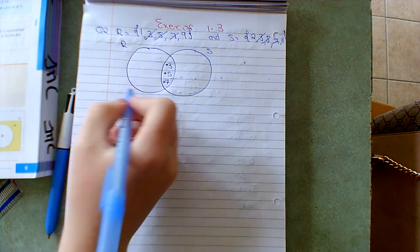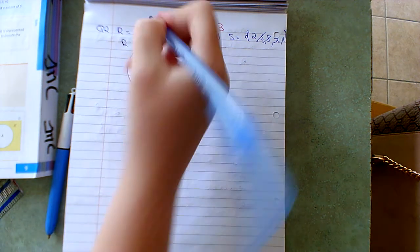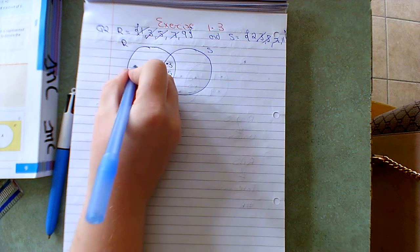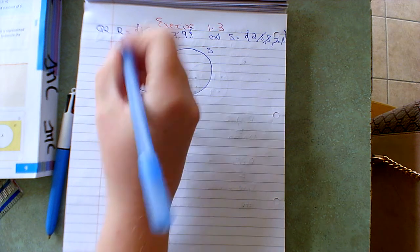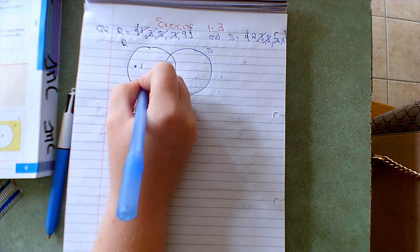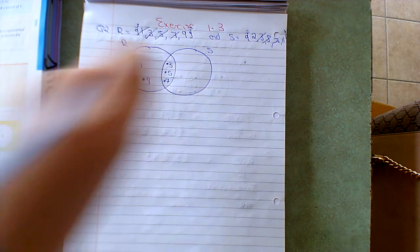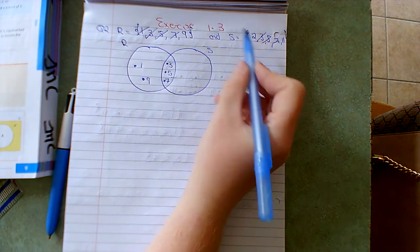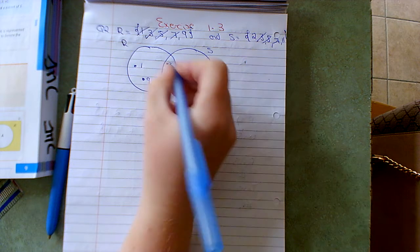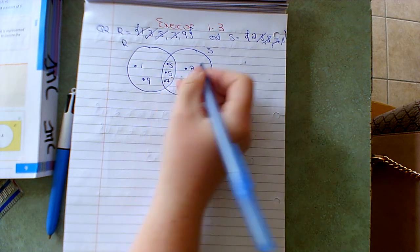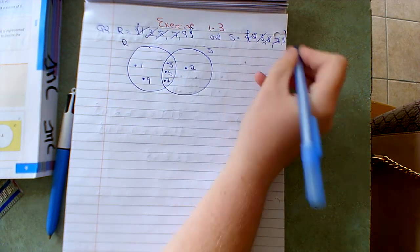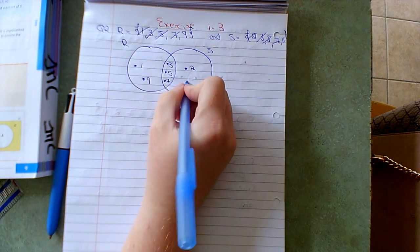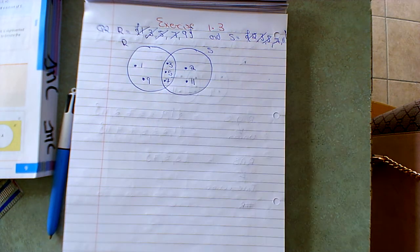Now for what's left over, we'll go outside. So here I have 1, putting in 1, and here I have 9, putting in 9. Then in set S, 2 is left over so I'm putting in 2. And then I have 11, so I put in 11. That is the Venn diagram completed.